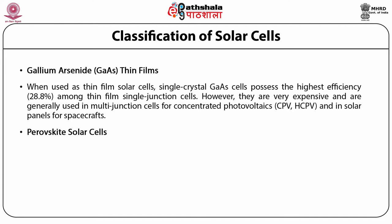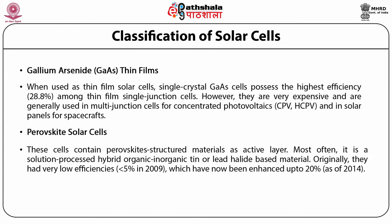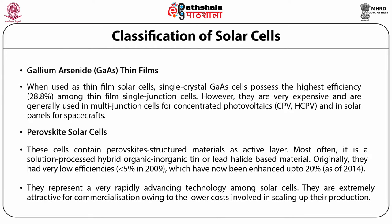About perovskite solar cells: these cells contain perovskite structured materials as the active layer. Most often, it is a solution-processed hybrid organic-inorganic tin or lead halide based material. Originally, they had very low efficiencies, less than 5% in 2009, which has now been enhanced up to 20% as of 2014. They represent a very rapidly advancing technology and are extremely attractive for commercialization owing to the lower costs involved in scaling up their production.